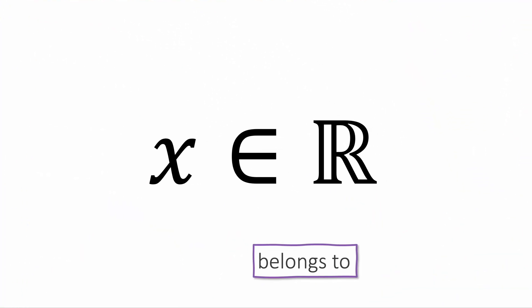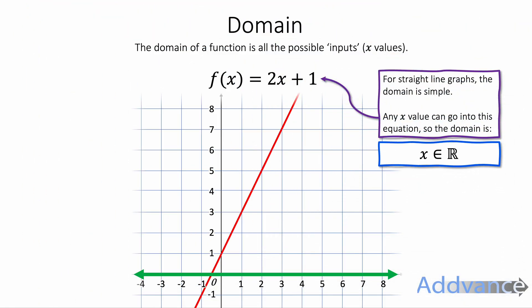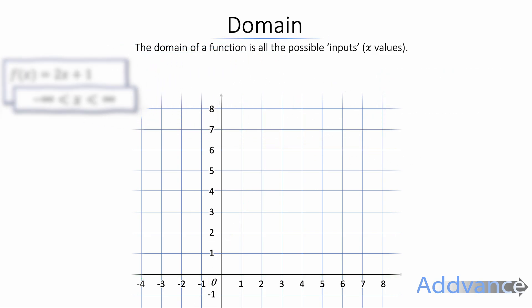So we say x belongs to all real numbers and we use this notation here, this proper mathematical notation. x belongs to the set of all real numbers. And so all this is saying is that for this function here, x can be any value at all. That's the domain of a straight line graph.